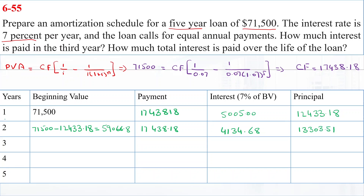In Year 3, the beginning value is $59,066.82 minus $13,303.51, which equals $45,763.31. The payment remains $17,438.18. The interest is $3,203.43, and the principal payment is $14,234.75.